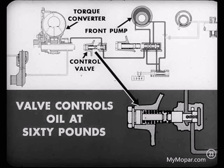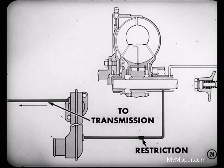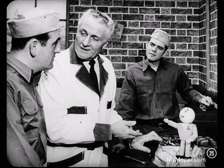As soon as pressure in the torque converter builds up to 60 pounds per square inch, this control valve maintains that pressure. After leaving the converter, the oil returns to the transmission through a restriction where it lubricates the gears. Then it drains down to the transmission oil pan where it is again picked up by the pumps and recirculated. Since the torque converter oil system functions the same under all operating conditions, we won't have to discuss it further.